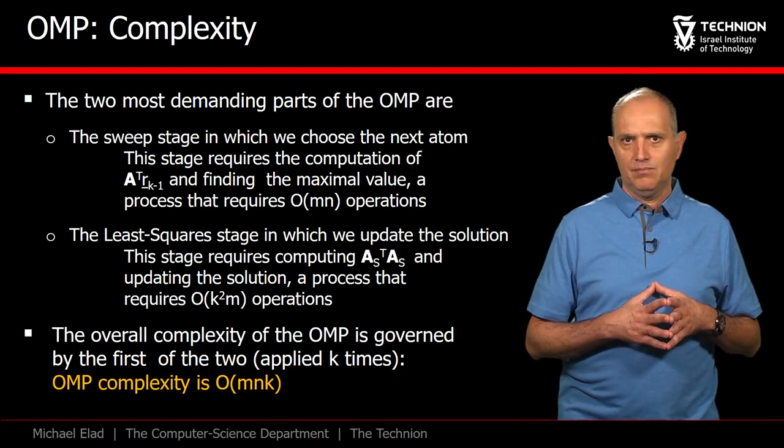The second is the least square step that updates xk. The main effort here is in computing As transpose times As, but there are various shortcuts that can be applied here. Bottom line,